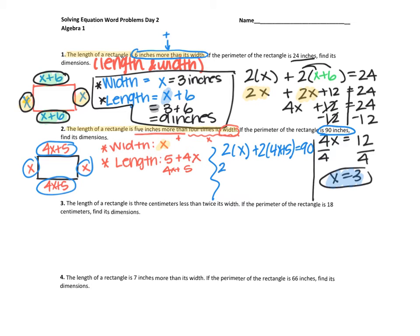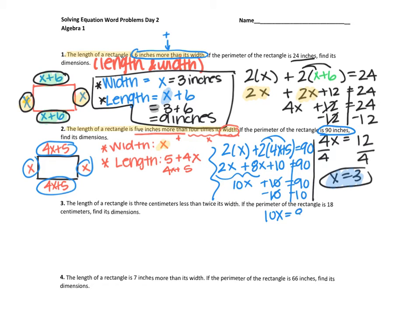When I clean this up, two times X is two X. Then distribute: two times four X is eight X, and two times five is 10. So now I have two X plus eight X plus 10 equals 90. Combine like terms: two X plus eight X makes 10X. So 10X plus 10 equals 90. Subtract 10, leaving 10X equals 80. Divide by 10, and 80 divided by 10 gives me eight.